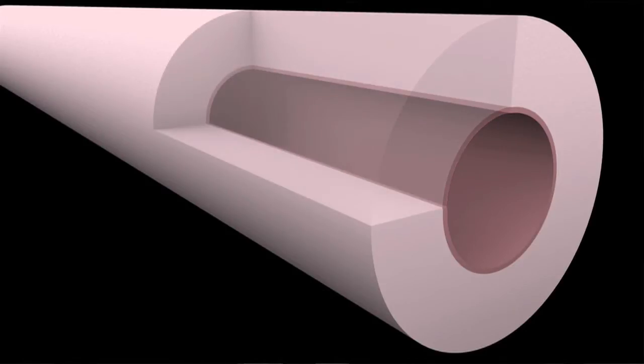Arteries are flexible tubes that carry oxygen-rich blood to all of your body. Every artery has a wall, an inner lining, and an open space in the middle.